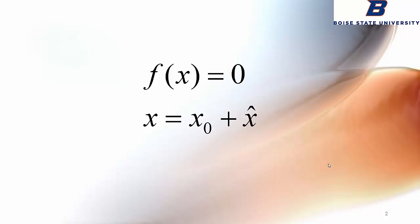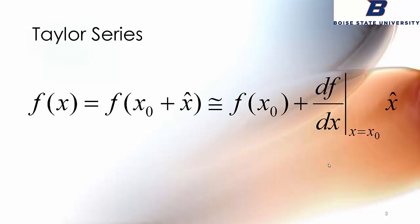x0 is our initial guess. This is what we think the answer probably is, and x hat is a correction to it.